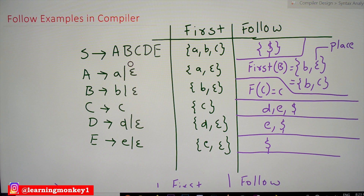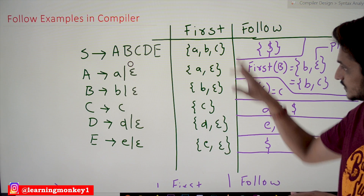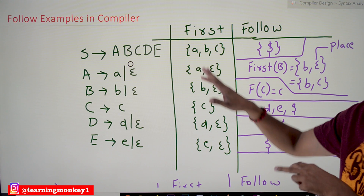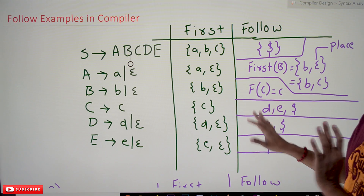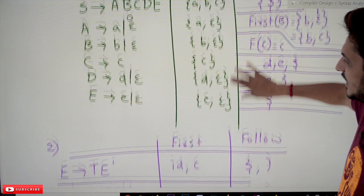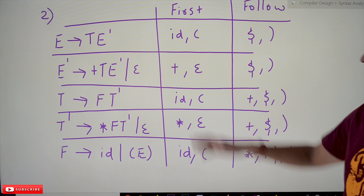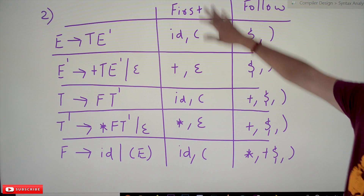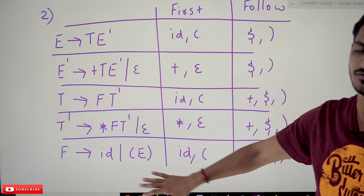If you don't understand, please watch our previous class — we explained why we apply those four conditions for FOLLOW and FIRST. Watch those and then come back to this example, then move to the next example. Coming to our next example, this is the expression grammar which we used in our previous classes. These are the FIRST symbols for this expression grammar.